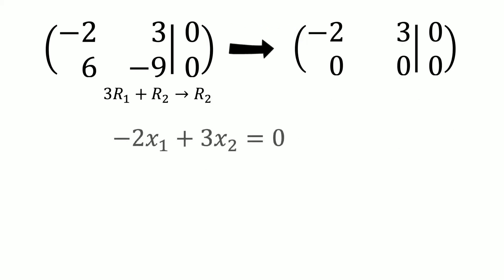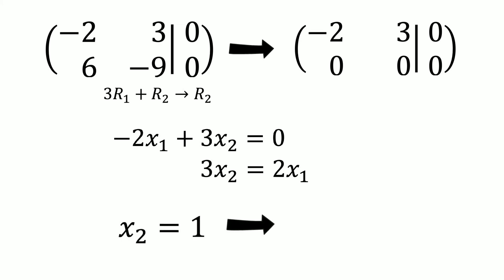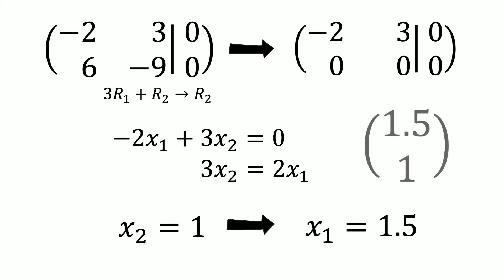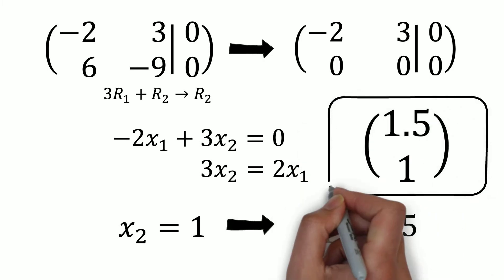When we multiply minus 2 by x1 and 3 by x2, we find that minus 2x1 plus 3x2 equals 0. This means that 3x2 equals 2x1. We can now choose any value for either x1 or x2. In this case we will say that x2 equals 1. This means that x1 has to be 1.5. This gives us the eigenvector of 1.5 and 1, with 1.5 filled in for x1 and 1 for x2.